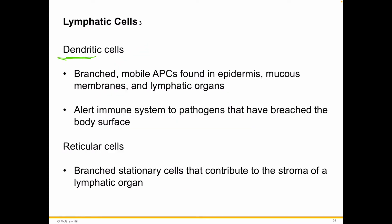Dendritic cells are named because they have arms — like what a dendrite is — processes that extend out, making them branched antigen-presenting cells. They can wander about the body. We tend to find them in a few specific key places: the epidermis, the mucosal layers, and the lymphatic organs — all the hot spots where a lot of immune activity is happening.